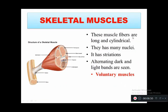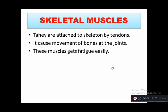Skeletal muscles have long cylindrical fibers with many nuclei and striations, and they are voluntary. A specific feature is the presence of alternating dark and light bands. Skeletal muscles are attached to the skeleton by tendons and cause movement of bones and joints. These muscles get fatigued very easily — when you do more exercise you get pain due to fatigue of skeletal muscles.